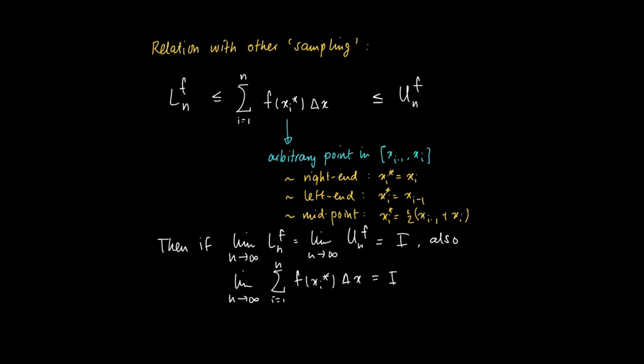Which means that the limit as n approaches infinity of the sum from i equals 1 to n of f(xi star) times delta x should be I as well.